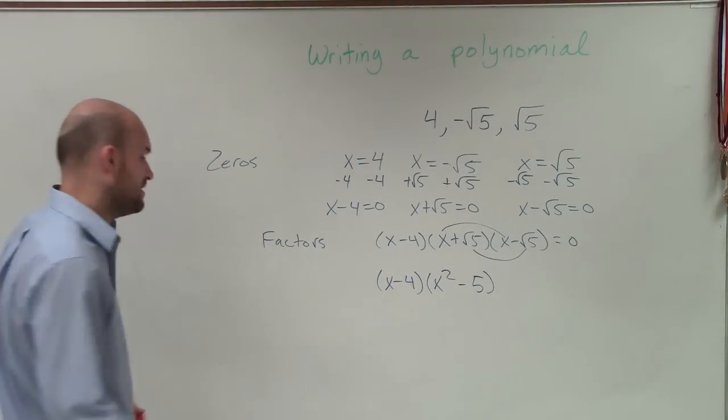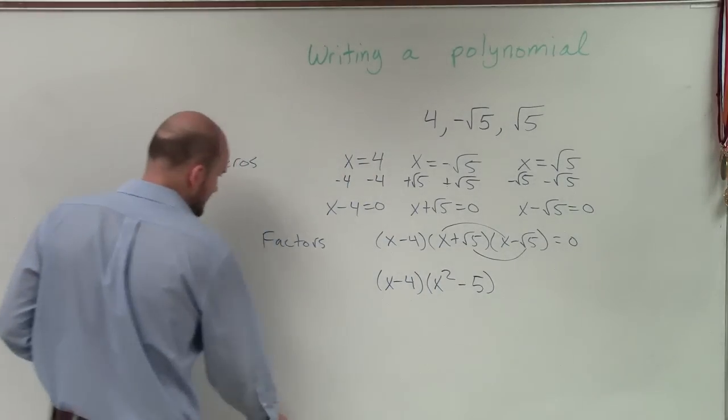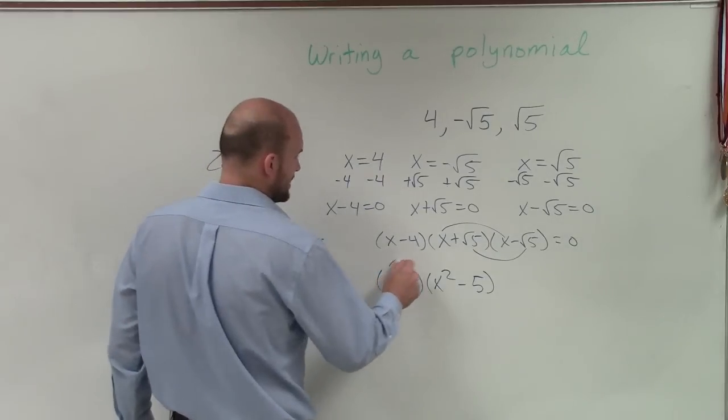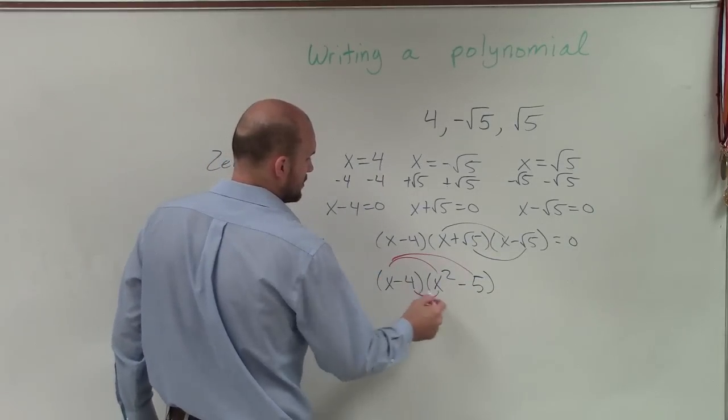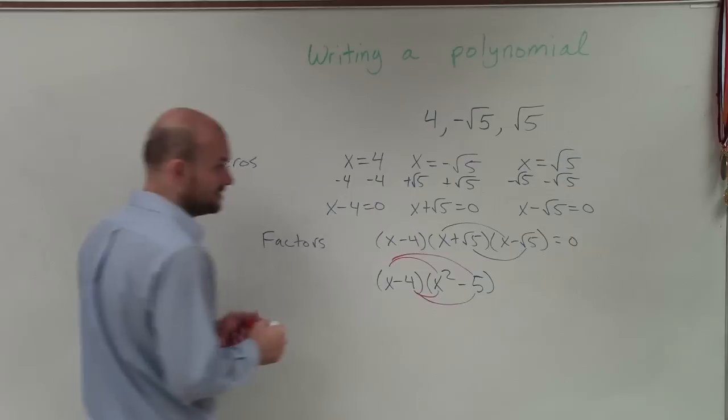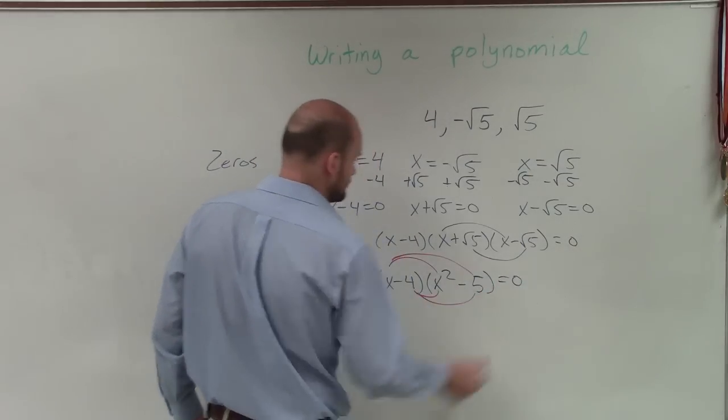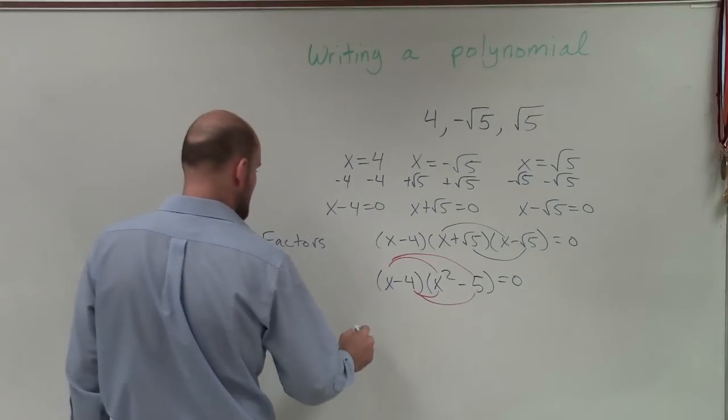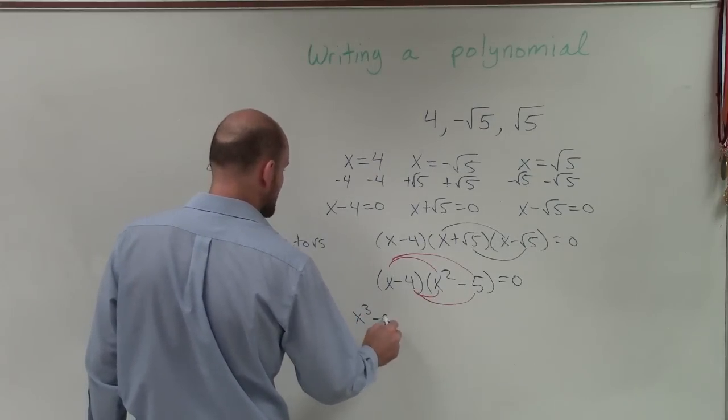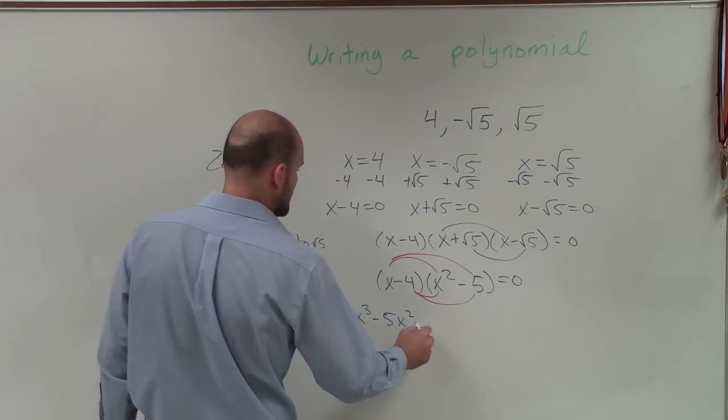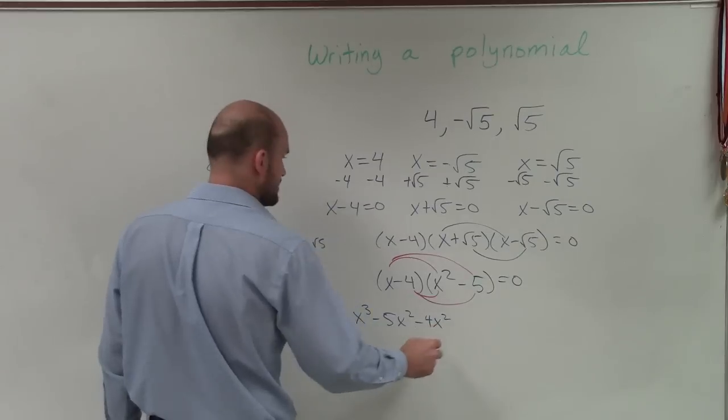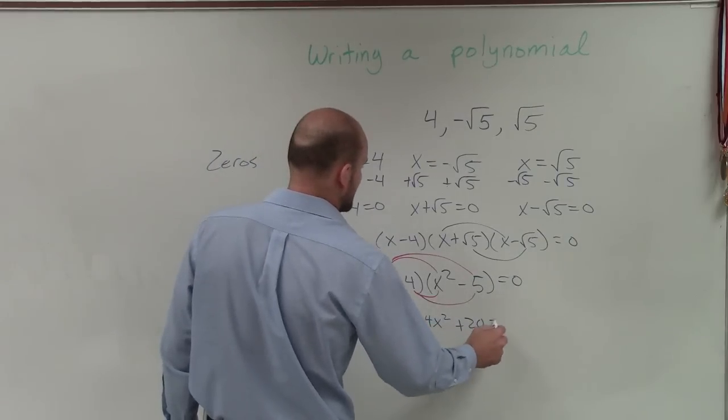OK, now I need to multiply these out. And I can just apply the FOIL method. You could use the box method. Really, anything you want to. All right. Oh, I'm sorry. This still equals 0. All right, so by multiplying this out, I now get x cubed minus 5x squared minus 4x squared plus 20 equals 0.